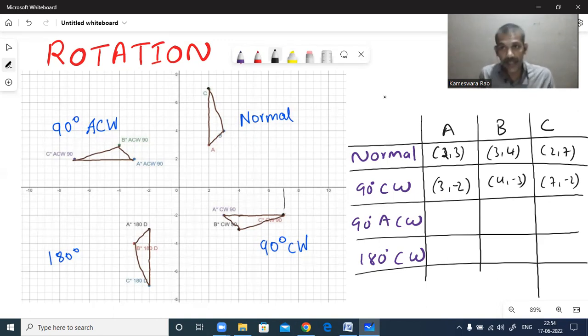If you want to rotate 90 degrees anti-clockwise, then minus y comma x. That means minus 3 comma 2. Minus plus means it will be in quadrant 2. Similar with this also minus 4 comma 3. Minus 7 comma 2. Check: A is here minus 3 comma 2. This is minus 4 comma 3. Correct. Minus 7 comma 2. Correct.